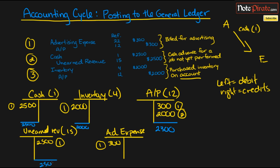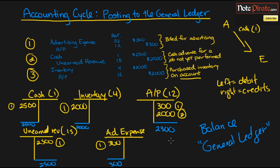$2,500 for unearned revenue and $300 for advertising expense. The point of all this is that if we ever want to know the balance for any specific account, we can look at the general ledger to get the balance for that account. So if our manager asks what the outstanding balance of all our accounts payable liabilities is, we can say we have $2,300 of payables outstanding. That's the point of the general ledger — it encapsulates all of the accounts within your company.